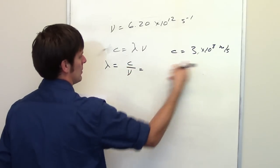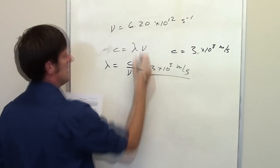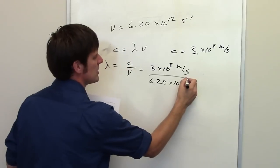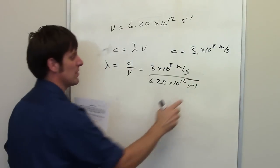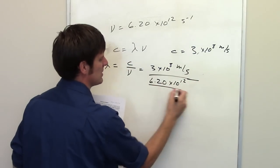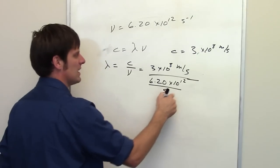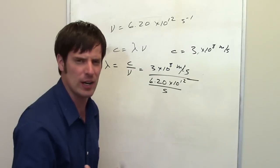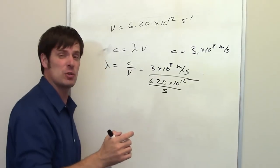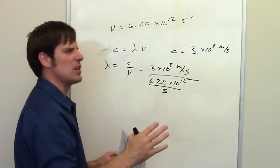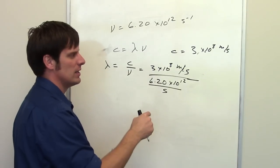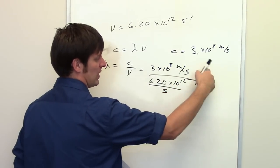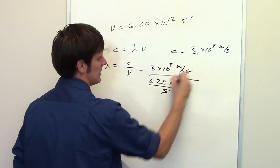Which is the speed of light divided by the frequency, which is 6.2 times 10 to the 12th inverse seconds. Now this is interesting because inverse seconds is really a set of units in a denominator. I've got inverse seconds in the denominator of this fraction. It's in the denominator of the denominator, which means that it's actually in the numerator. So having a unit or a value in the denominator of a denominator is the same thing as having it in the numerator. So that means the seconds cancel each other out.